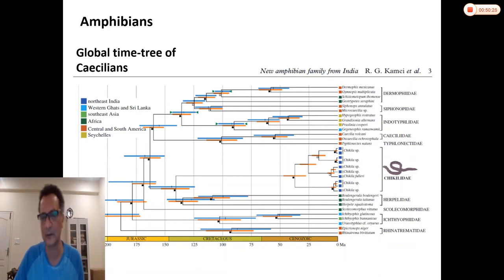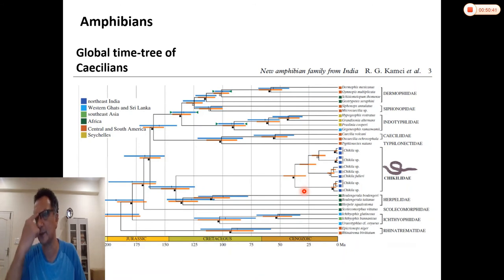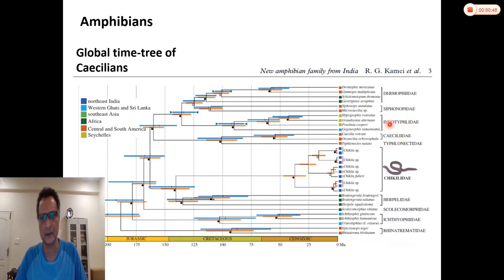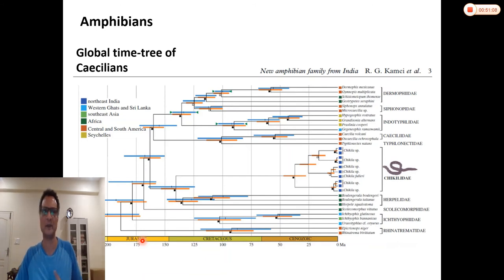Among amphibians, caecilians are also quite ancient. Work done by Chun, a student in Viju's lab at Delhi University, showed that if you look at the caecilian groups distributed in India and examine the root age of that radiation, it falls way before the two vicariant events we are talking about. So caecilians are probably another group that conforms to plate tectonic-mediated vicariance.